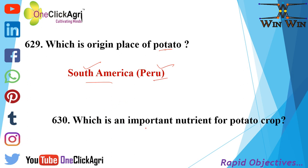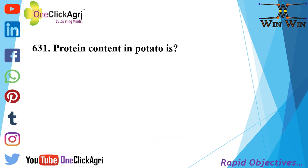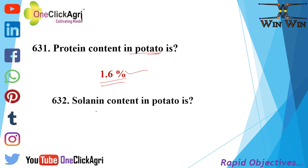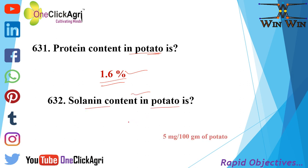The important nutrient for potato crop is Nitrogen. Protein content in potato is 1.6%. Solanin content in potato is 5 mg per 100 g of potato.